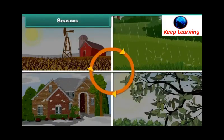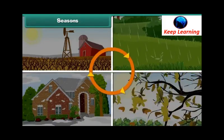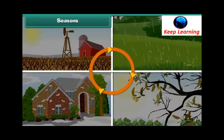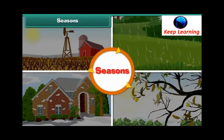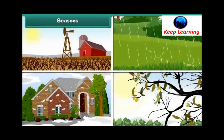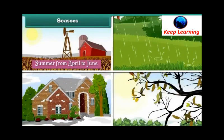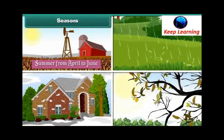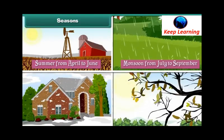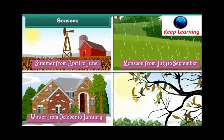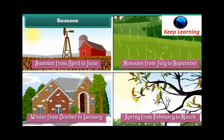The weather changes in cycles and these cycles are called seasons. There are four main seasons in a year. They are summer from April to June, monsoon from July to September, winter from October to January, and spring from February to March.